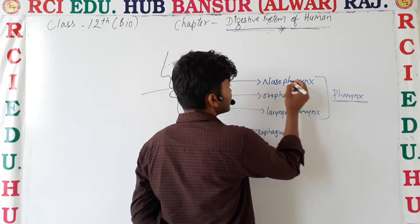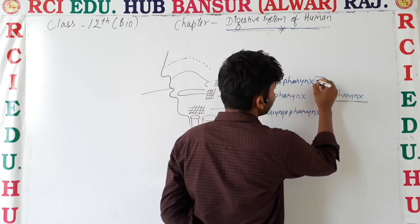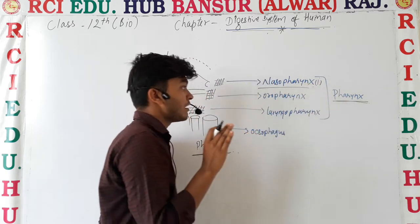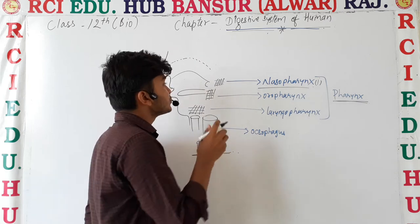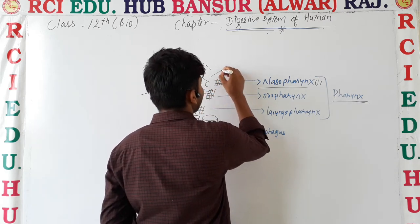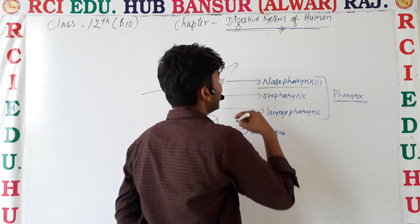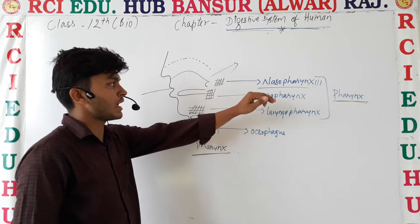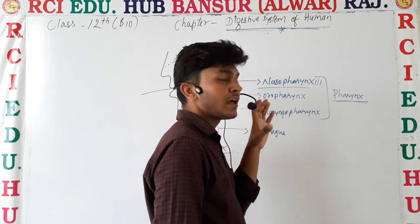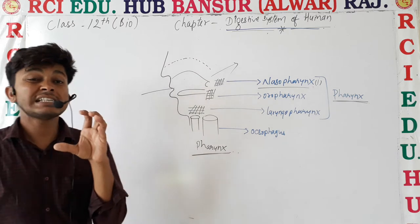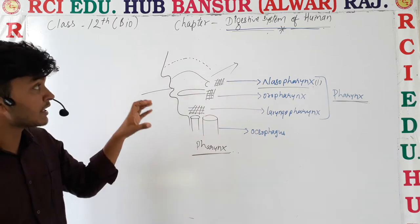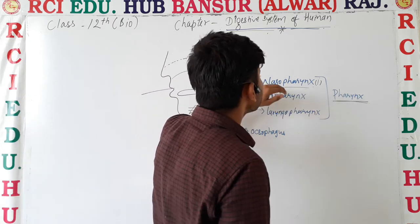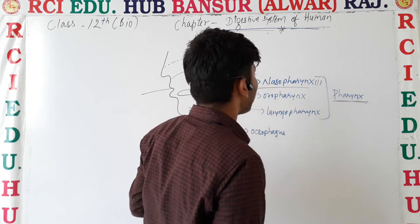First, we talk about region number one, which is the nasopharynx. The pharyngeal region which is found in the nasal chamber — connected to the nasal chamber or internal nares — that region is known as nasopharynx.